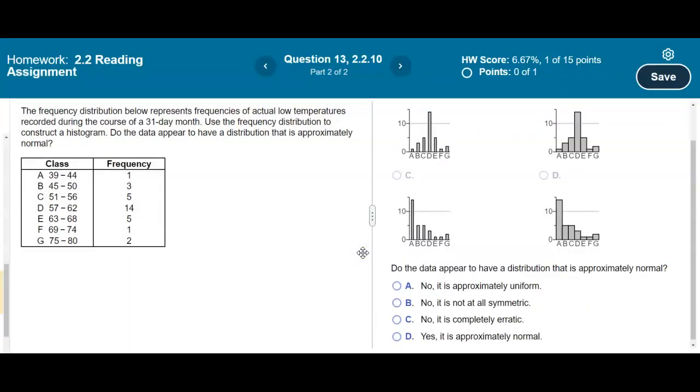Now the next question says do the data appear to have a normal distribution or have a distribution that is approximately normal? We would say yes because it looks approximately normal.